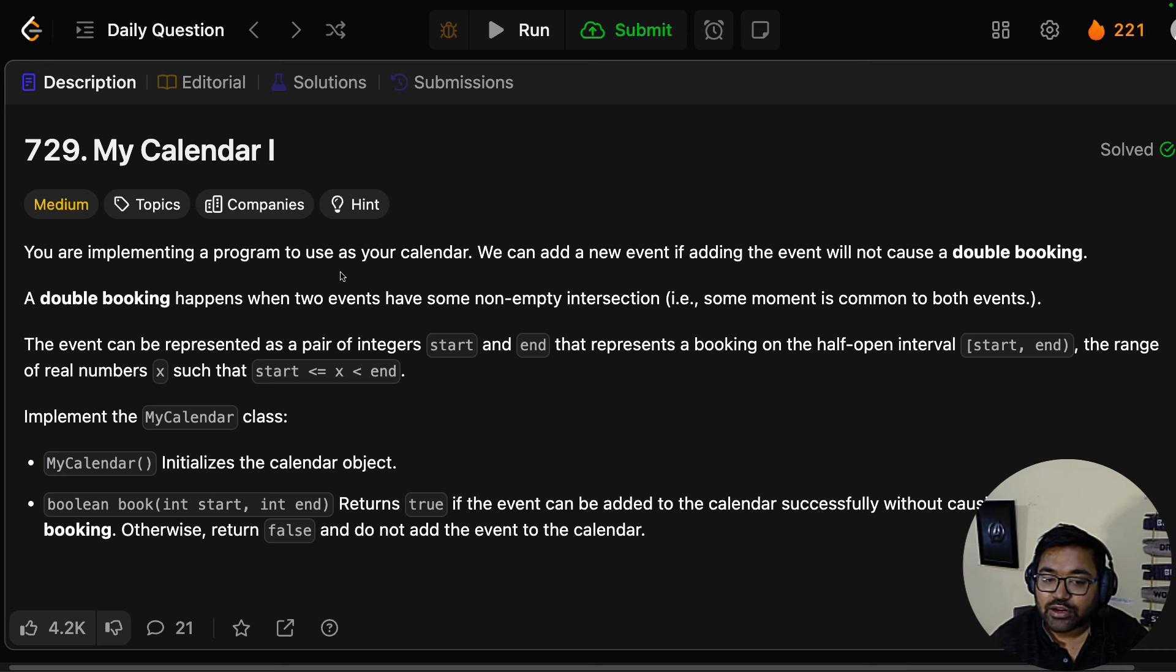The events can be represented as a pair of integers start and end, that represent a booking on the half open interval start to end. The range of real numbers x such that start is less than or equal to x but less than end. So basically end is not included.